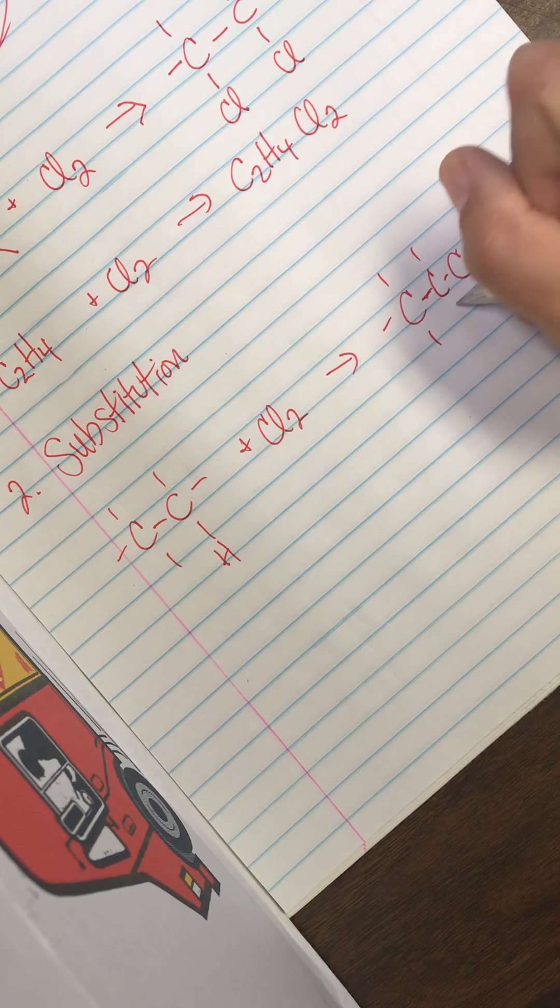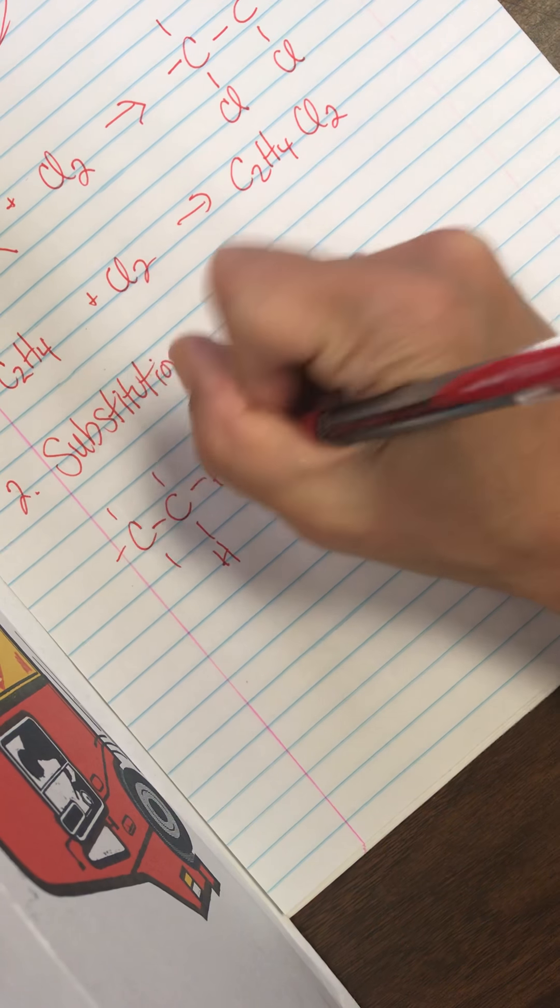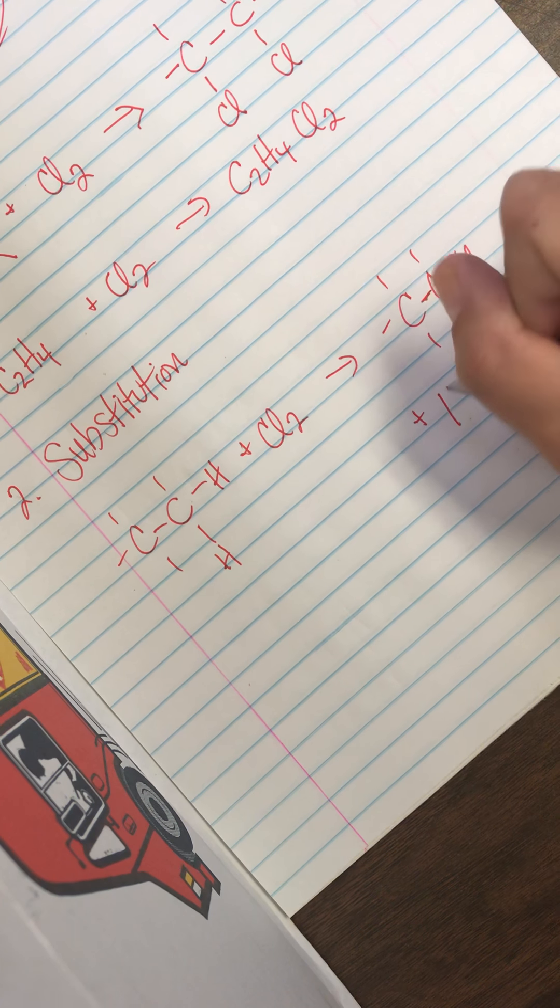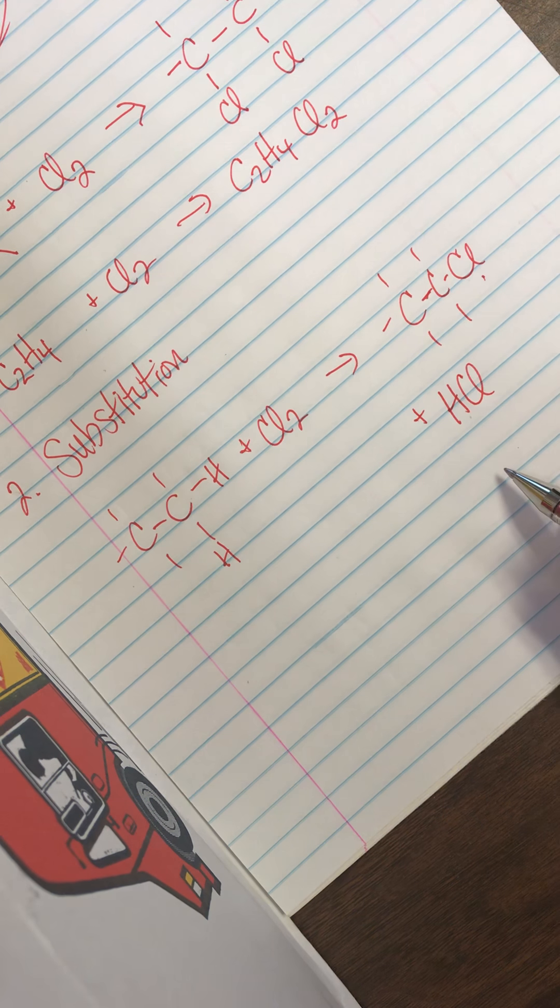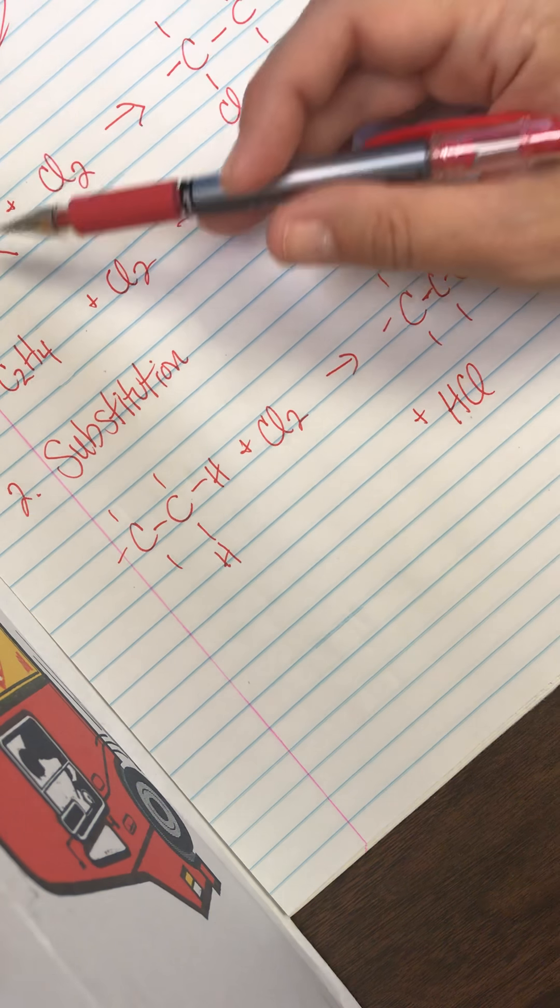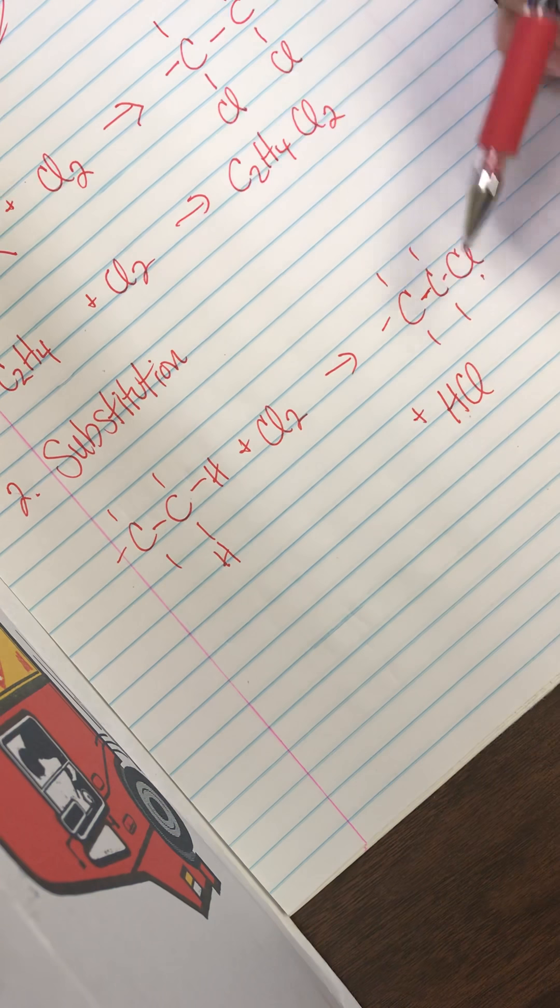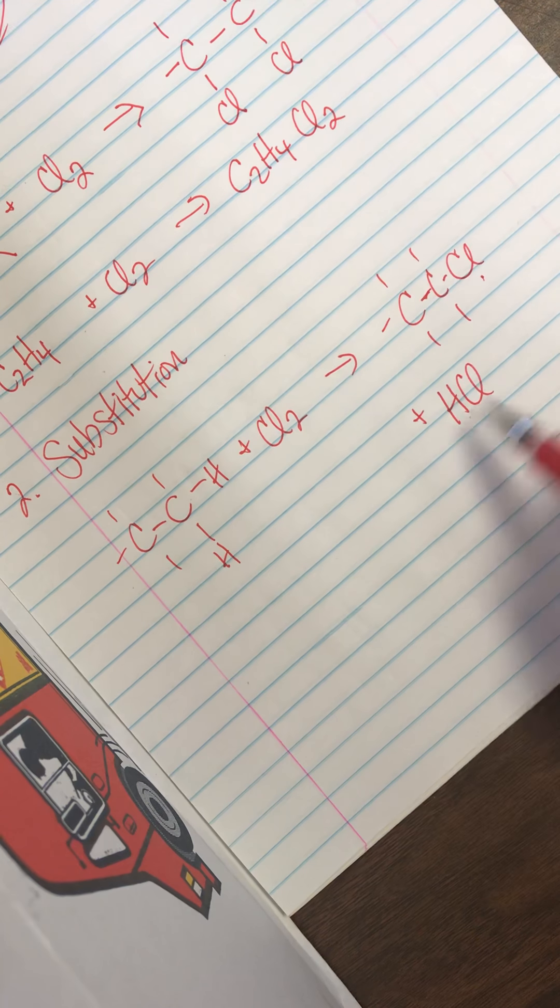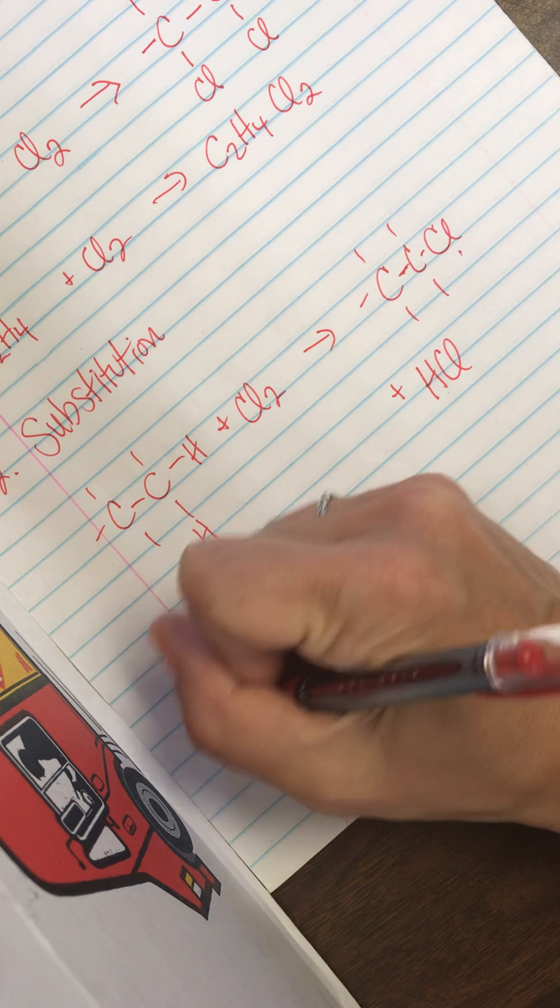And I still have H's around the outside. So the H that was right here has now switched with one of these chlorines. I have two products. Since it wasn't unsaturated, I don't have spots to add them in. So I have to just switch one out. Addition, you add them together. This one, you just switch one.